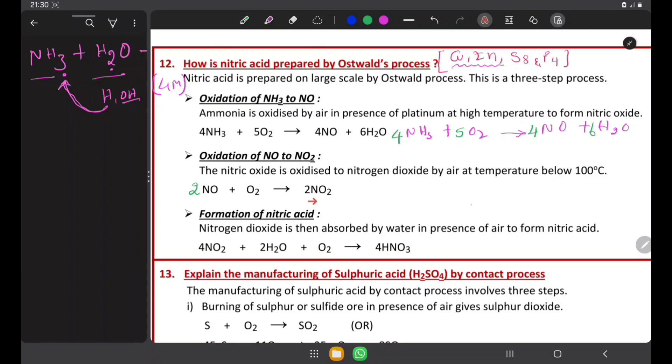So, nitrogen dioxide is then absorbed by water in presence of air to form nitric acid. Whatever nitrogen dioxide we got in the step 2, that nitrogen dioxide absorbed by water in the presence of oxygen converted to nitric acid.